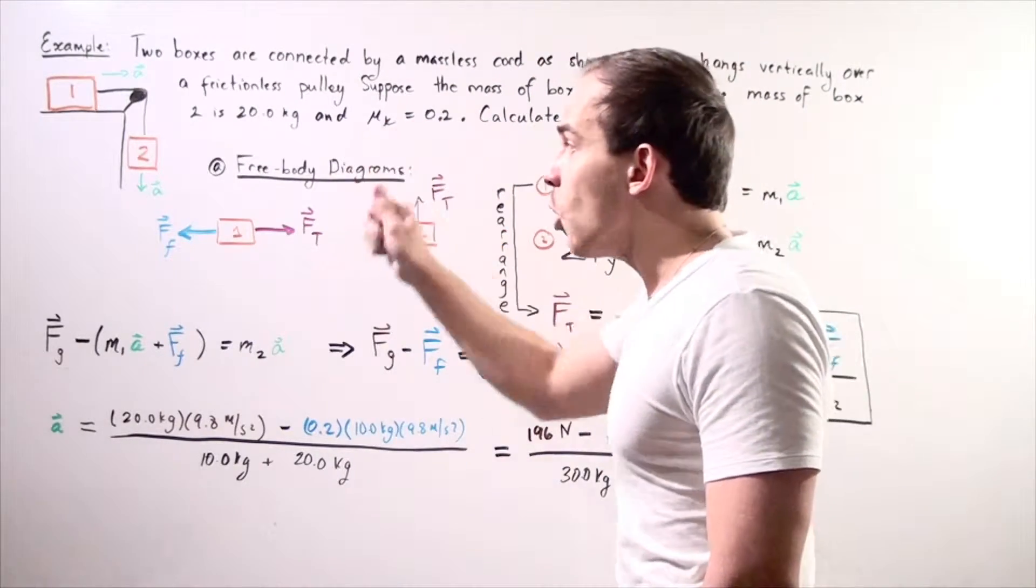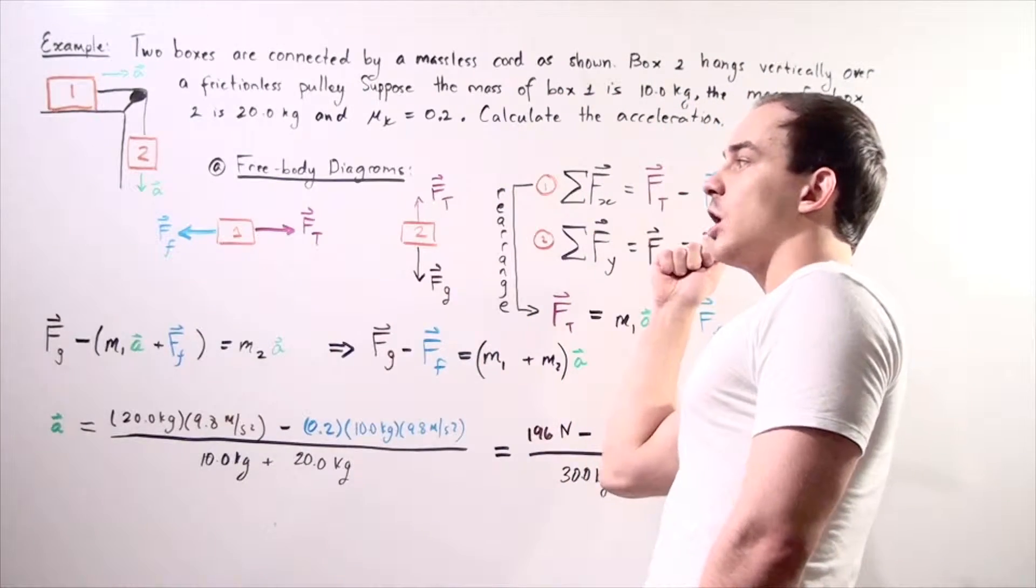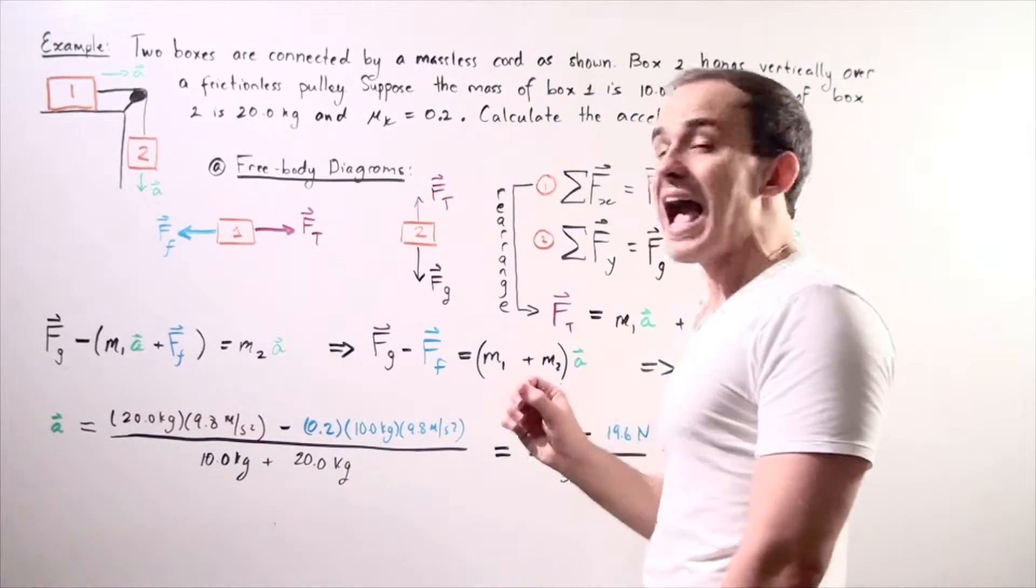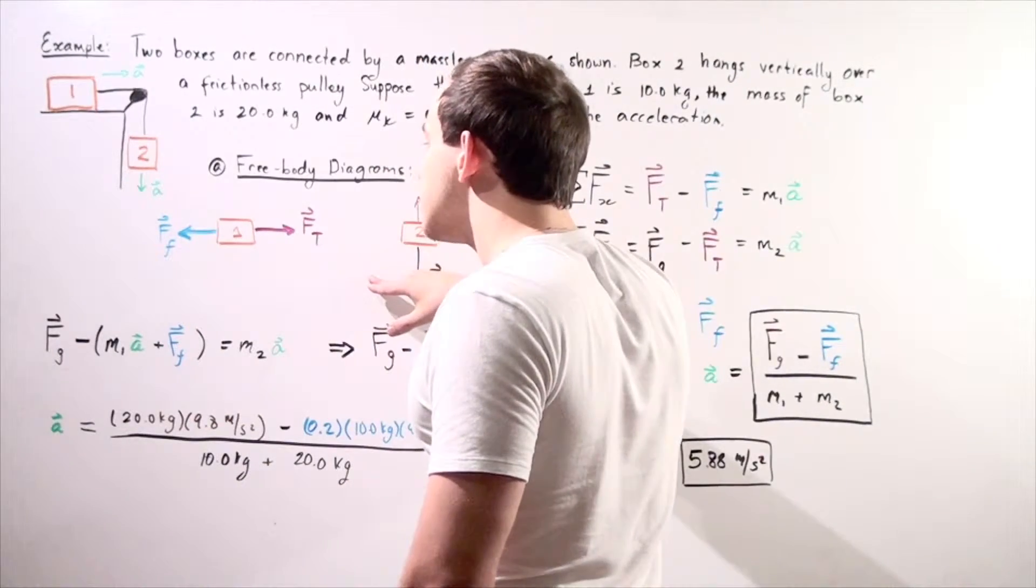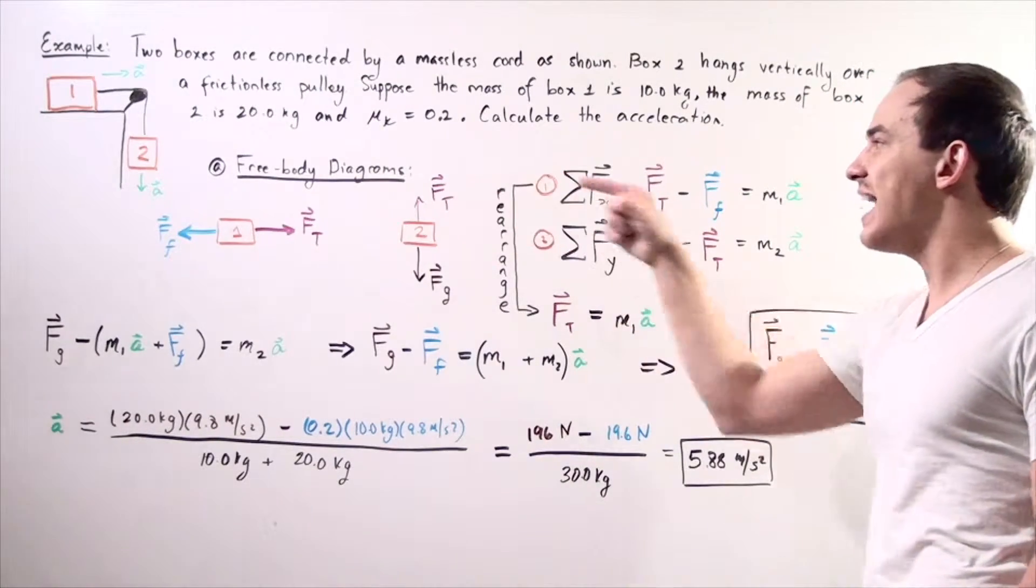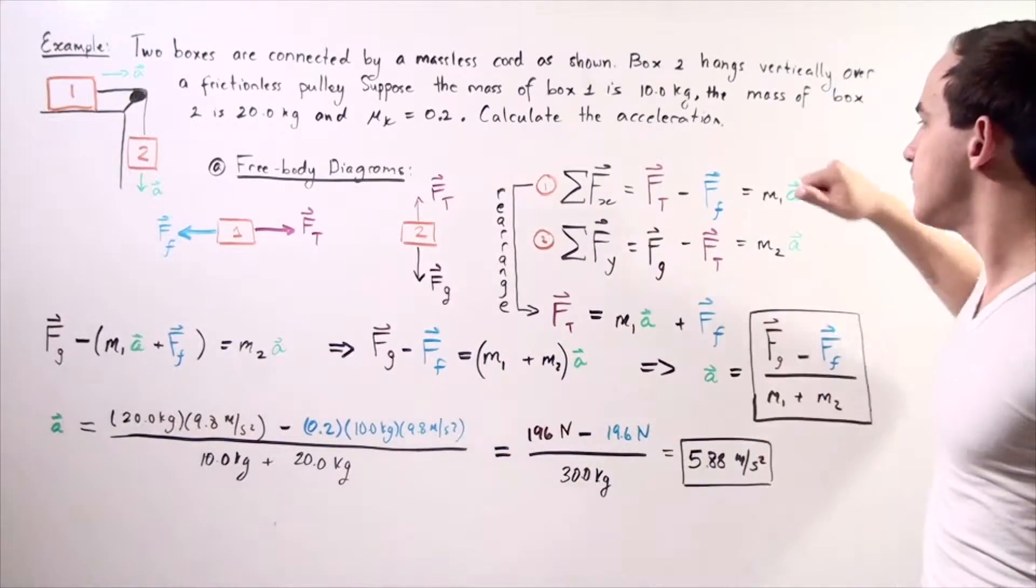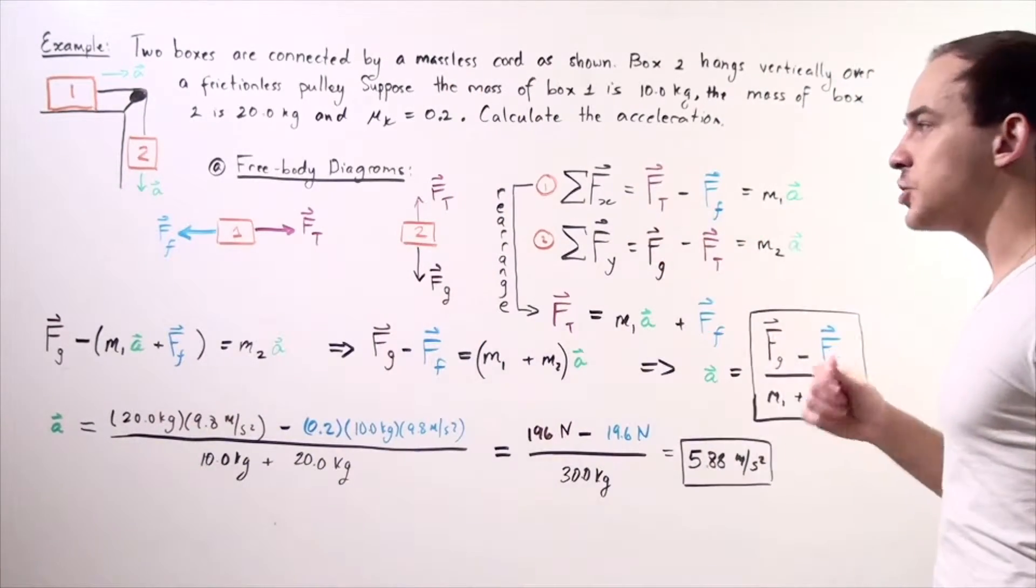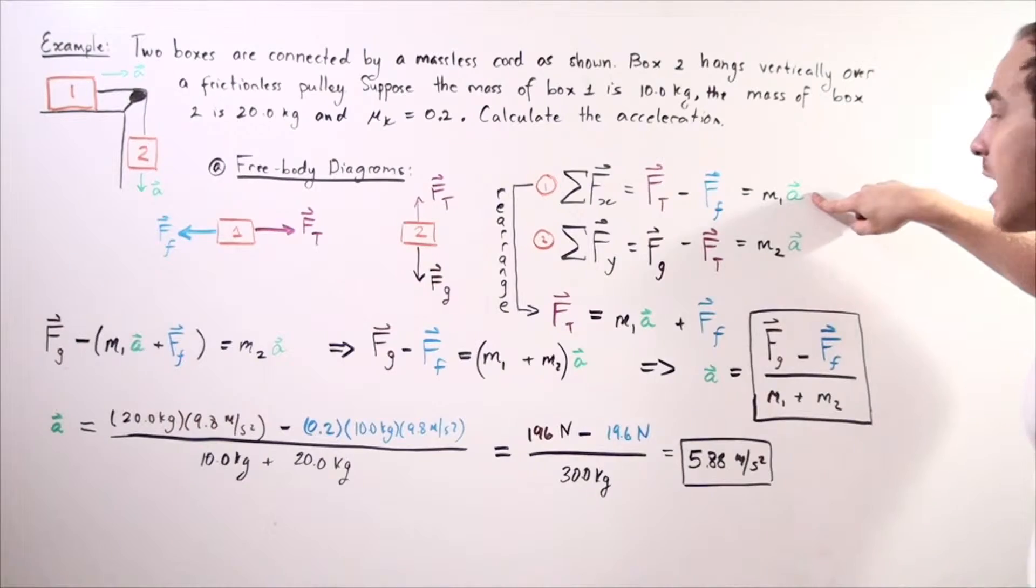We have the force in the rope, the tension shown by FT acting in the positive direction along our x axis. And the force of friction is resisting the motion, acting in the opposite direction. If we sum up all the forces, we get the following equation. The sum of all the forces acting on box one along the x axis, we choose going this way to be positive. So the tension in our rope minus the force of friction equals the mass of box one multiplied by whatever our acceleration of box one is.